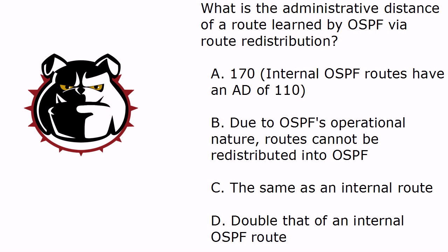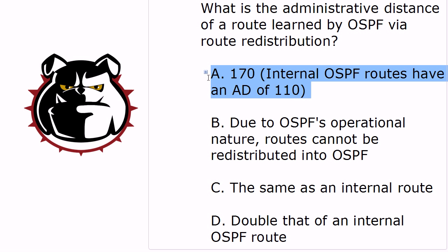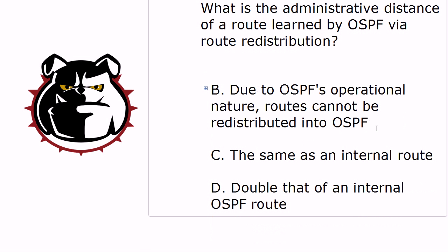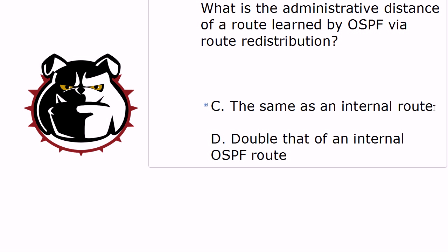What is the administrative distance of a route learned by OSPF via route redistribution? Don't fall for 170 — that's EIGRP. You can definitely redistribute routes into OSPF, and the answer is that it's the same as an internal route. The administrative distance does not change.